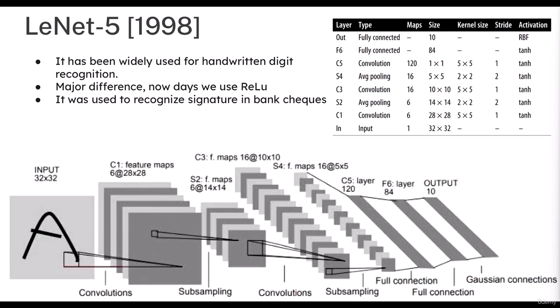Let's get started with the LeNet-5 network. This LeNet-5 network came in 1998 and was originally used for handwritten digit recognition. The major difference between nowadays and the time when LeNet-5 was proposed is the use of ReLU, batch normalization, and dropout. At that time, ReLU, batch normalization, dropout, and max pooling were not used — only average pooling was being used. It was a very simple network.